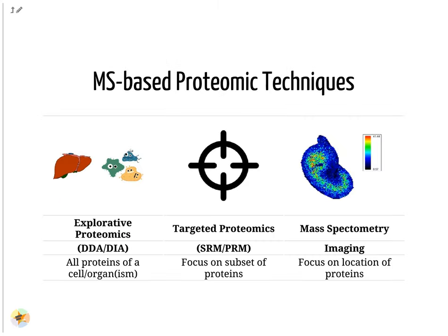Different mass spectrometry-based proteomic techniques exist. The most common one is explorative or shotgun proteomics, which aims to identify as many proteins as possible from a sample. It comes in two flavors: data-dependent acquisition (DDA) and data-independent acquisition (DIA).